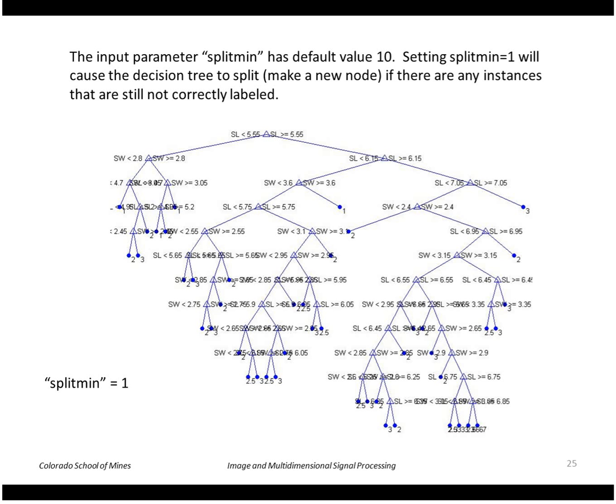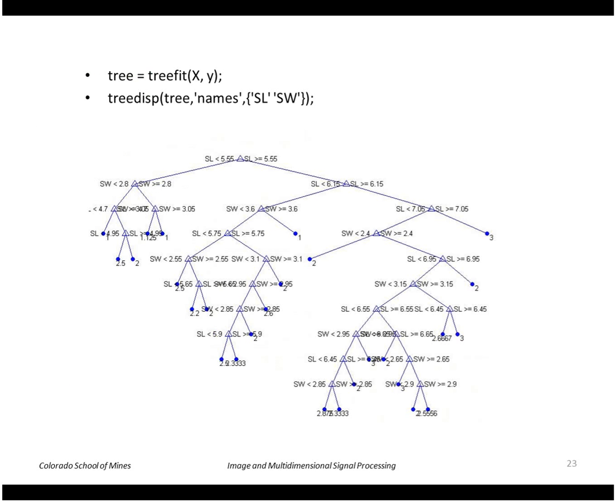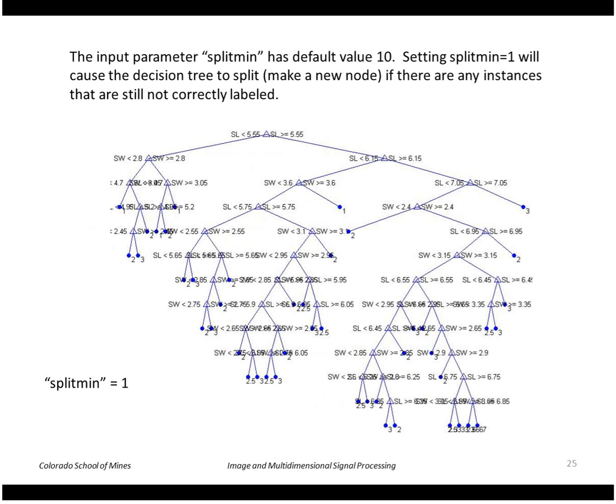For example, if you set split_min equal to 1, it will cause the decision tree to split if there are any instances not correctly labeled. The previous example was split_min of 10, this is split_min of 1. You can see it's a more detailed tree, it's more complicated.